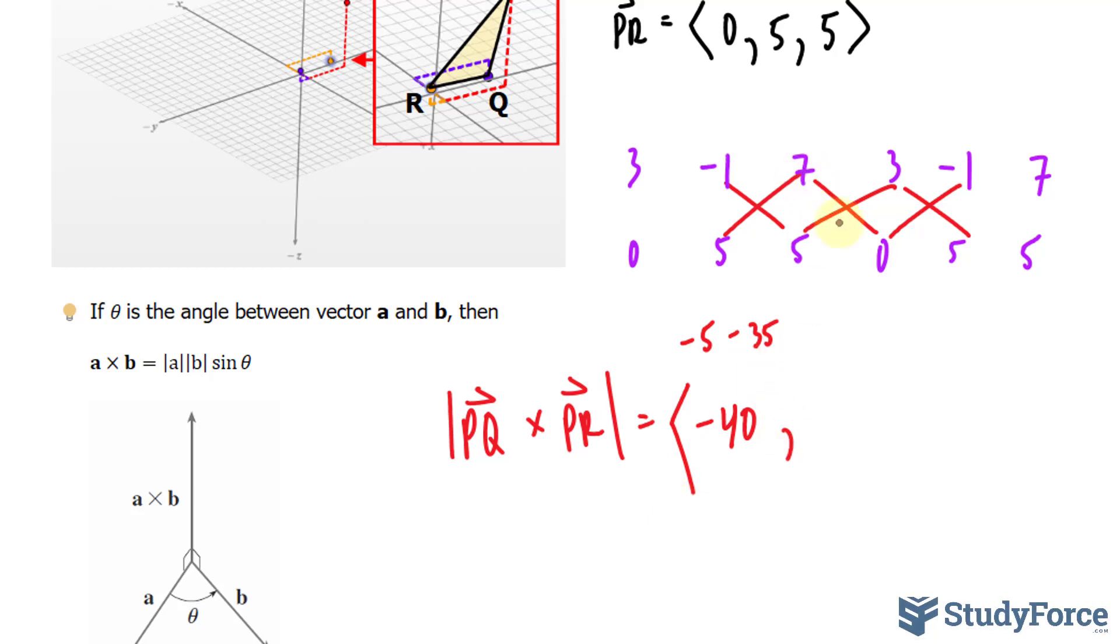To find the Y component, 7 times 0 is nothing. Minus 5 times 3, that's negative 15. And over here, 3 times 5 is 15. Minus 0 is positive 15.